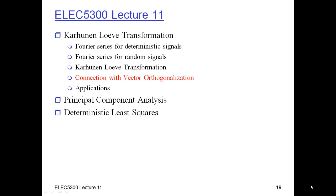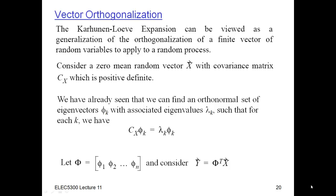This is part 3 of lecture 11 of ELEC 5300. What I'd like to do in this part is connect the idea of the Karhunen-Loève transformation with the idea of finding a transformation of a finite vector of random variables to a set of uncorrelated random variables. The Karhunen-Loève expansion is really a generalization of that basic idea applied to a random process.